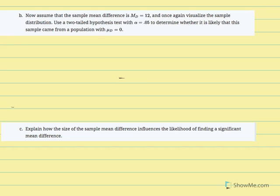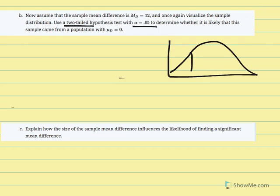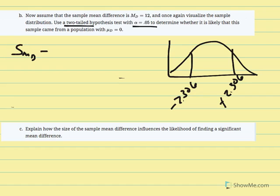The critical region is still negative 2.306 and positive 2.306. The estimated standard error of the mean difference also doesn't change since standard deviation and sample size are unchanged — it remains 6 over the square root of 9, equal to 2. Now our t equation is the sample mean difference minus the hypothesized population mean difference over the estimated standard error.